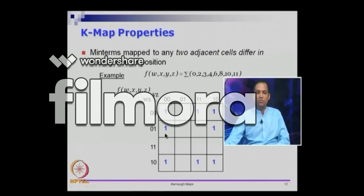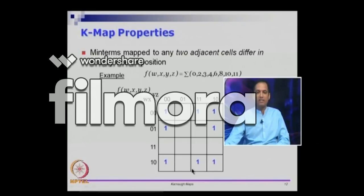Let us do this once more: 4 is here so we put a 1; 5 is this term but 5 is missing; 6 is the last column; then 7 you come back. So you go from left to right, then skip, then come back. For the next row: 8, 9 skip, come back — so 8, 9, 10, and 11. The last row would be 12, 13, 14, and 15, but none of 12, 13, 14, 15 are present.